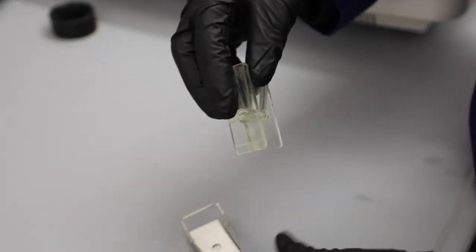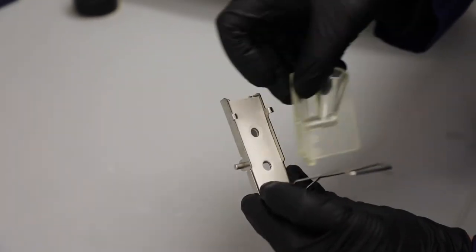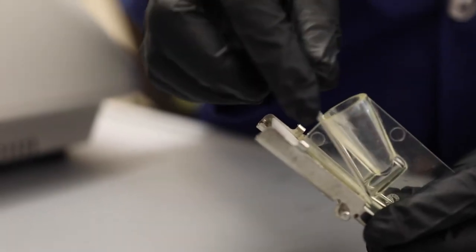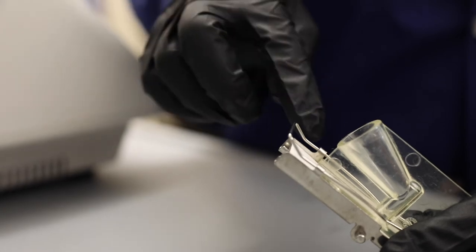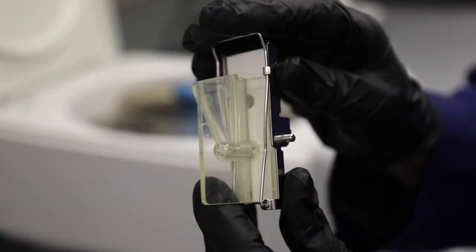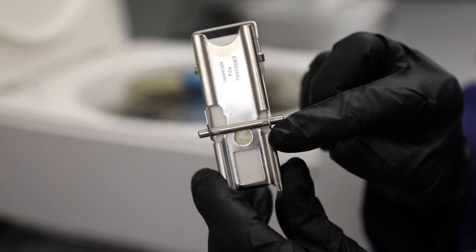Next, put the funnel on top of the filter so that it opens into the hole. Finally, lower and clasp the clamp on the cassette. Double-check that all parts are aligned so that no parts of the holes cover each other.